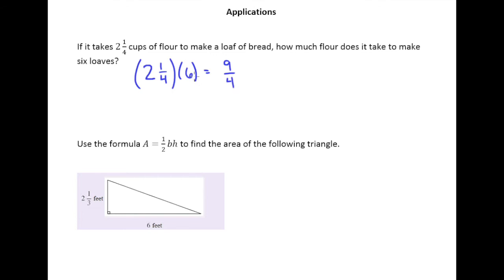And then, if we're multiplying by a whole number and we have a fraction involved, we better turn that whole number into a fraction, which we do by making that six over one. And so, we look to see any pre-reducing that can be done, and we can see that four and six share a common factor of two. So, four divided by two is two, six divided by two is three.